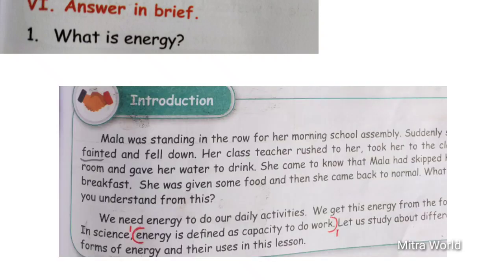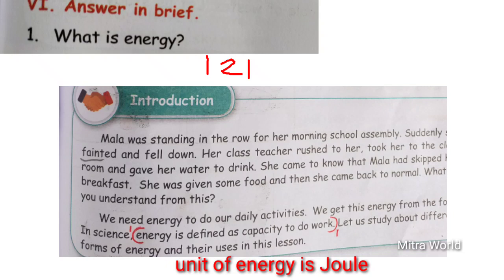Next — answer in brief. First question: what is energy? From page number 121 — energy is defined as the capacity to do work. You can also add: the unit of energy is joule. So the answer is: energy is defined as the capacity to do work; the unit of energy is joule.